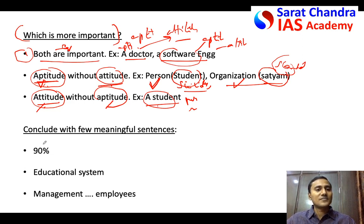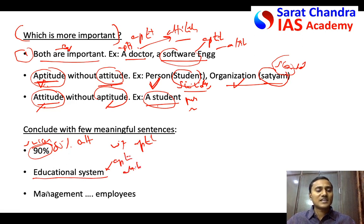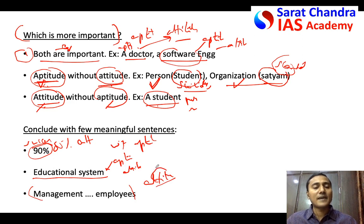As a conclusion, you can say that success in life depends 80% on attitude and 20% on aptitude. You can write some meaningful sentence, or you can say that the education system of India should include not only developing aptitude but also developing the right attitude through motivation. Or you can say statements like: the attitude of a company and its employees depends on the attitude of the management. Write meaningful concluding sentences to get more marks.